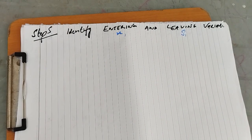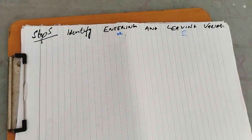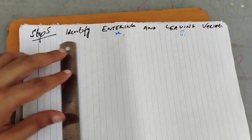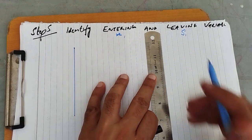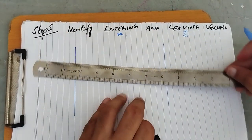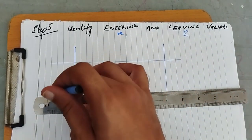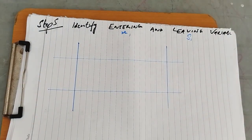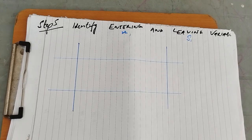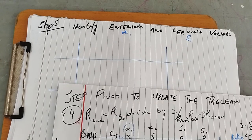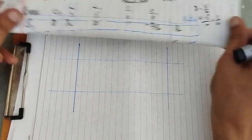We have found the leaving and the entering variable. Now we just have to draw the tableau. For the tableau, we need to develop it step by step.